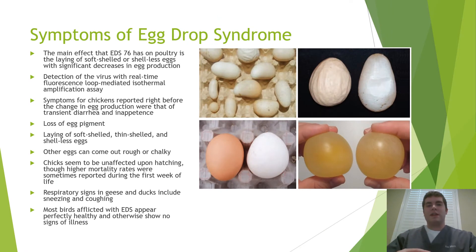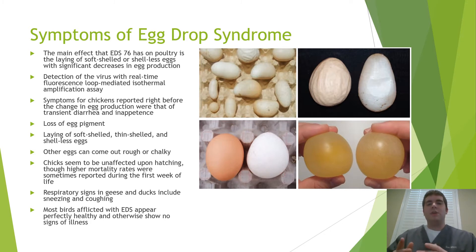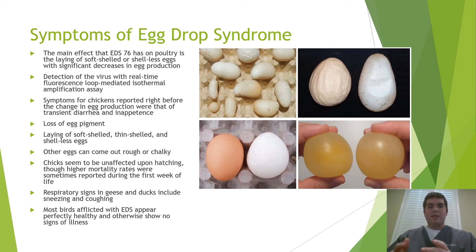The main effect that egg drop syndrome virus has on birds is the laying of soft, thin, and shell-less eggs, as well as a major decrease in egg production rate. There is detection with a real-time fluorescence loop-mediated isothermal amplification assay. However, since egg drop syndrome virus really doesn't occur in the states too often, most people rely on simple clinical signs to detect the virus. In some instances, poultry producers reported that some of their birds, just before the change in egg production, were experiencing signs of inappetence and transient diarrhea.